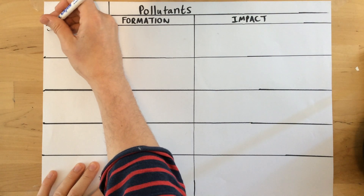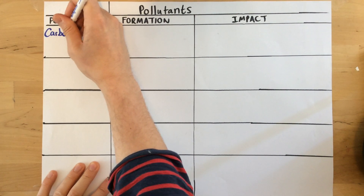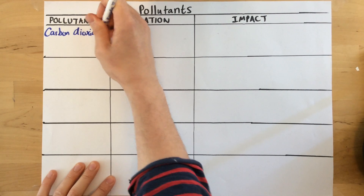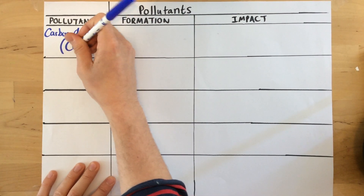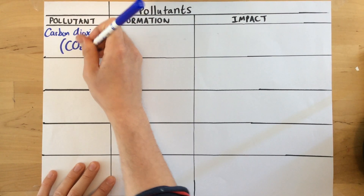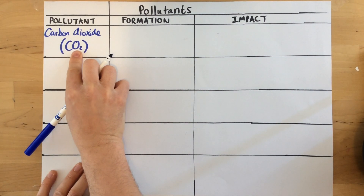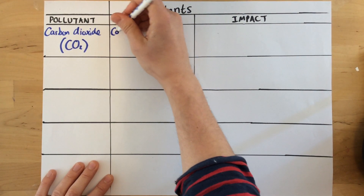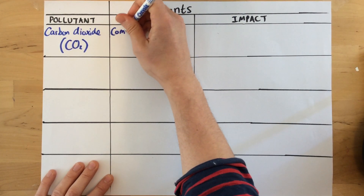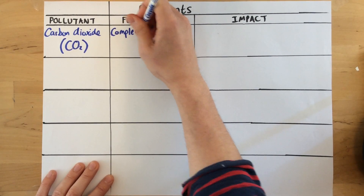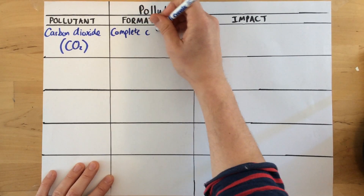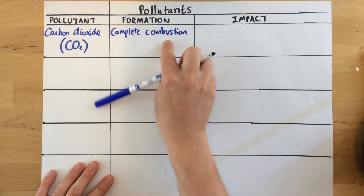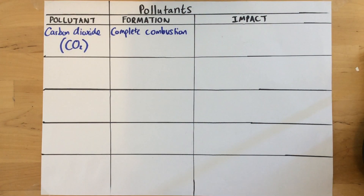The first example we're going to look at is carbon dioxide. Carbon dioxide's chemical formula is CO2 — dioxide meaning two oxygens. How is it formed? It's formed through the complete combustion of a hydrocarbon, which just means when there's a plentiful supply of oxygen.